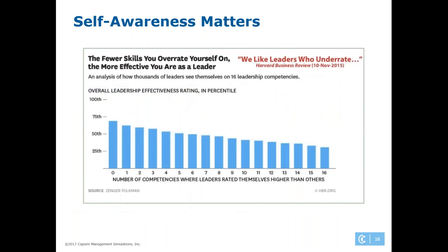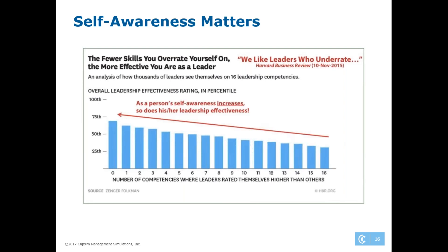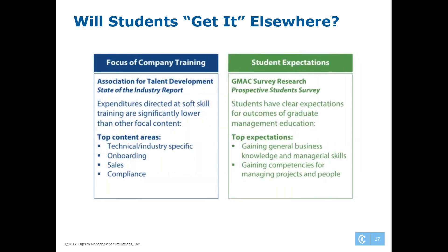To look at this, we examined a Harvard Business Review study of over 69,000 managers. They had the managers rate themselves in the same nine competencies, and what we found was that as a person's self-awareness increases — the more accurately they know their own abilities — the more effective they were as a leader. Now let's get on to the final topic: do students get soft skill development somewhere else?